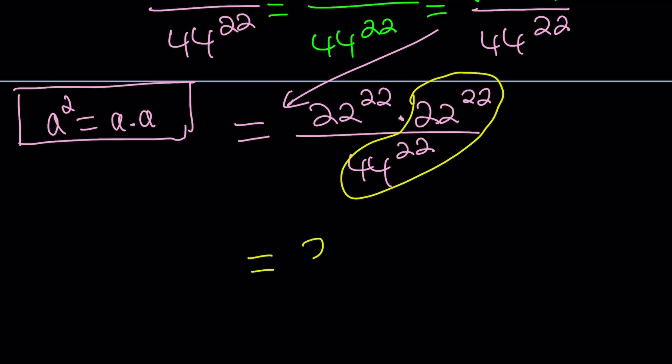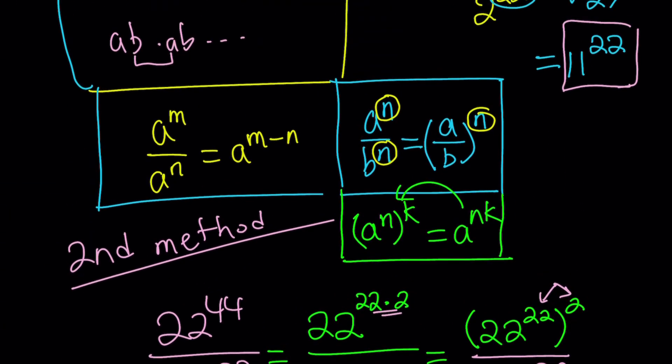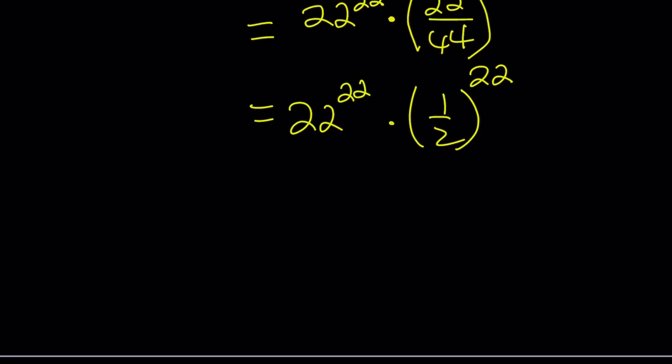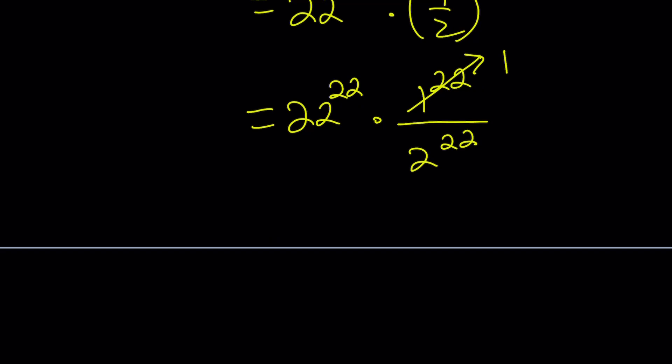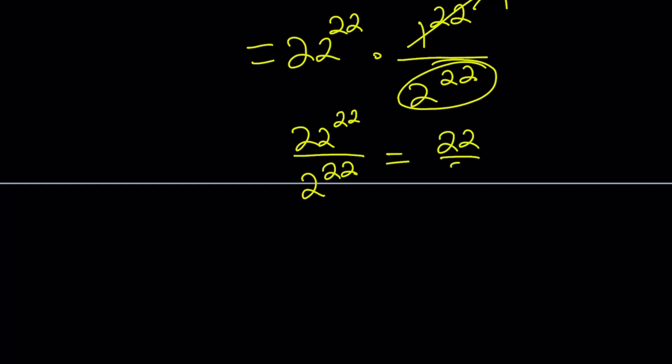This is equivalent to 22 to the power 22 times, now I'm going to divide 22 by 44 and use the common exponent. 22 over 44 is 1 half. Now another rule applies: a over b to the power n. We get 22 to the power 22 times 1 to the power 22 divided by 2 to the power 22. But 1 to the power 22 is just 1, so we have 22 to the power 22 divided by 2 to the power 22. Divide the bases and use a common exponent, which gives us 11 to the power 22. We got the same answer again.